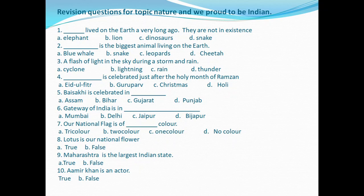The answer to number 1 is dinosaurs — they lived on Earth very long ago and are not in existence now. Question 2: 'Dash is the biggest animal living on Earth.' Read the question carefully — it says the biggest animal on Earth, not the largest land animal. If it were the largest land animal, we'd say elephant. But the biggest animal living on Earth is the blue whale.